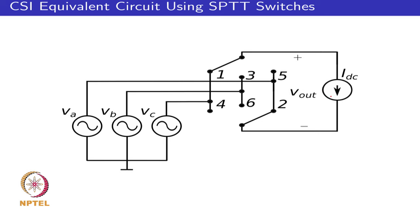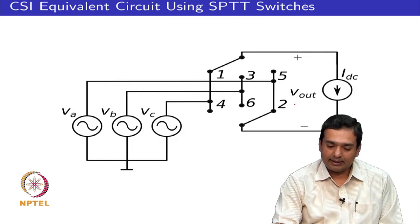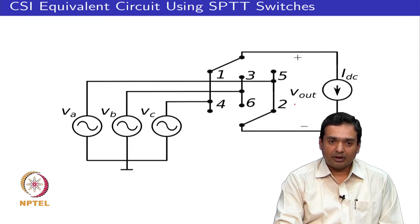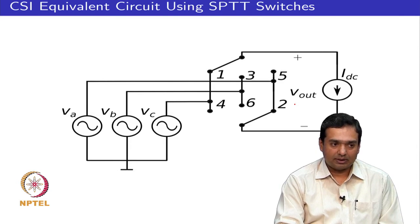In this configuration, the top single-pole triple-throw switch is at position 1, 3, or 5, meaning 1 and 3 are never shorted together — the voltage source is never short-circuited. Similarly, the top throw is on 1, 3, or 5 and the bottom on 4, 6, or 2, so the current source always has a path. You never open-circuit the current source. For example, when switch 1 is connected to phase C, IC = IDC, and switch 2 is connected to phase A, IA = −IDC. Power is transferred without any shorting of voltage sources or opening of the current source.